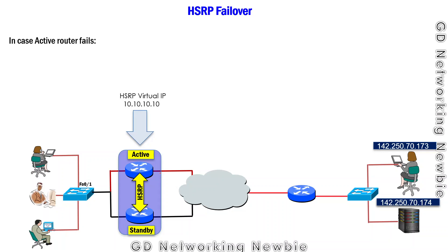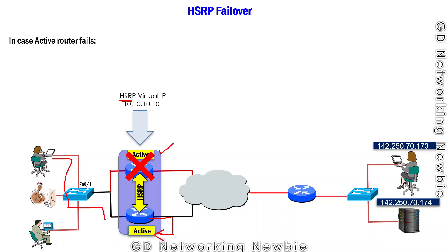Now let's discuss failover. If the active router fails, HSRP — the redundancy protocol — detects the failure. The standby router is then converted into the active state, and from that point onward all computers send their information through this new active router.